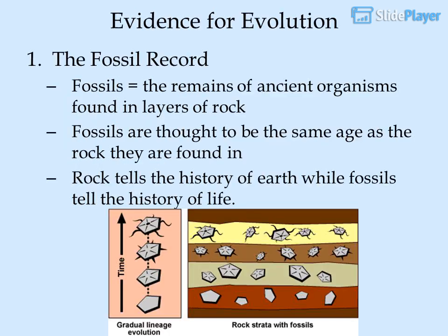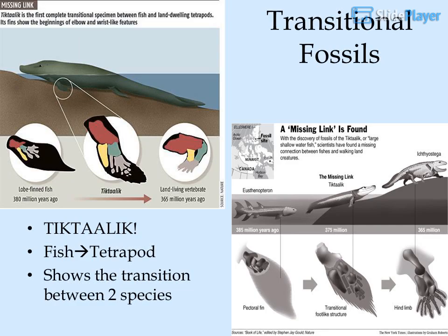Evidence for evolution — the fossil record: fossils are the remains of ancient organisms found in layers of rock and are thought to be the same age as the rock they are found in. Rock tells the history of Earth while fossils tell the history of life. Transitional fossils, such as Tiktaalik, a fish-tetrapod transitional form, show the transition between two species.